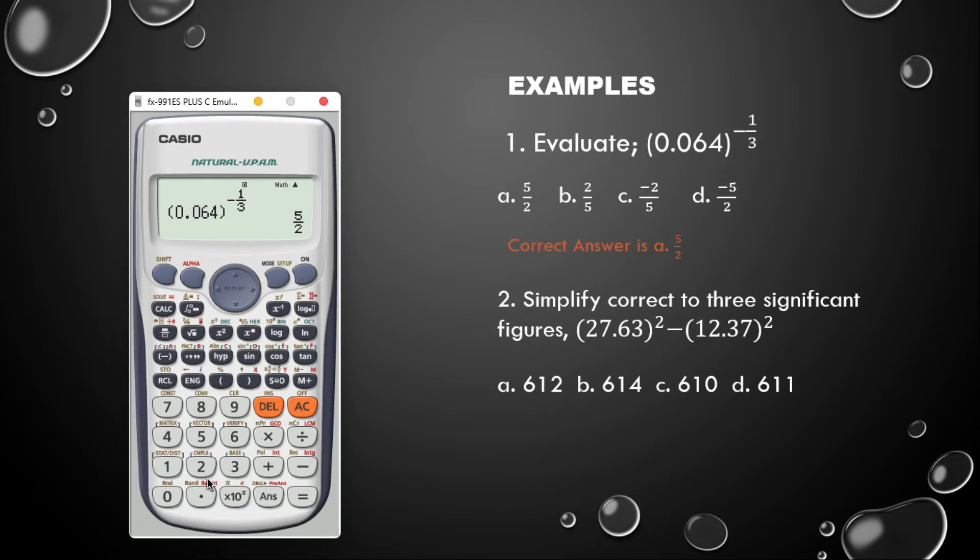So I pressed bracket open 27.63, I close the bracket, square, minus bracket open 12.37, close the bracket, exponent 2, hit the equal sign. Alright so our answer is in fraction, so you can hit this button to get it in the decimal form.